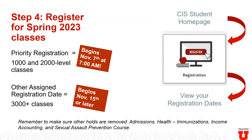That fourth and final step is to actually register for your spring 2023 classes. If you completed that advising appointment before November 7th, then you will have priority registration starting on November 7th at 7 a.m. That lets you register for 1,000 and 2,000 level classes. You will also have another assigned registration date. Most first-year students will have access to begin registering for classes on November 15th or later. If you are registering for any 3,000 level classes or above, you'll be able to finish registering for those starting at that second assigned date. To find that assigned registration date, log into your CIS student homepage, click on the registration tile, and there should be an option on the left side menu to view your registration dates.